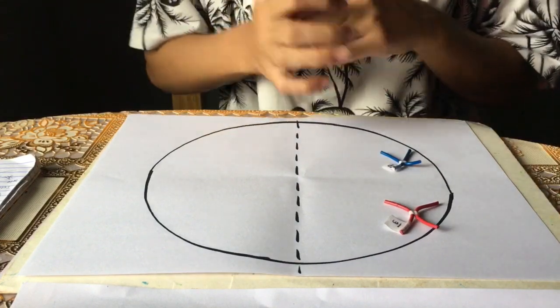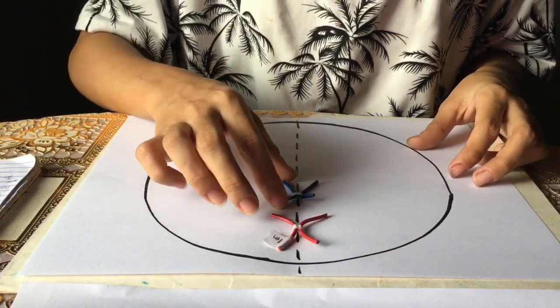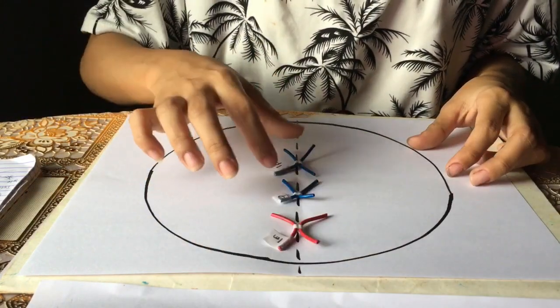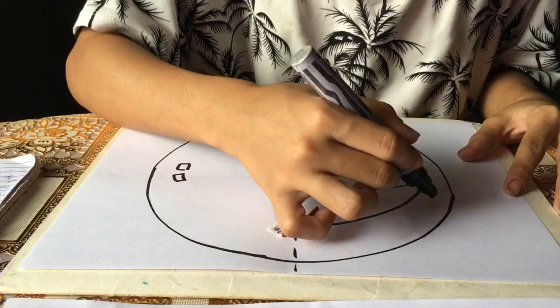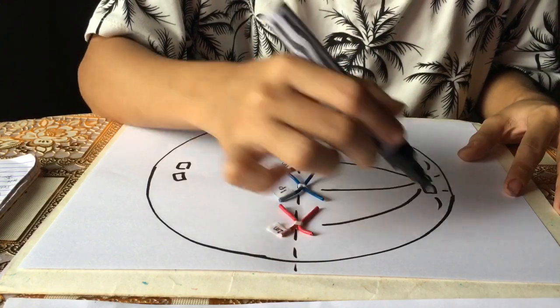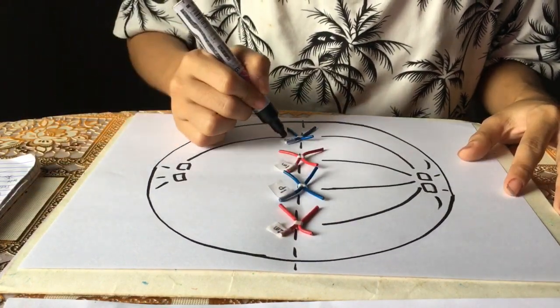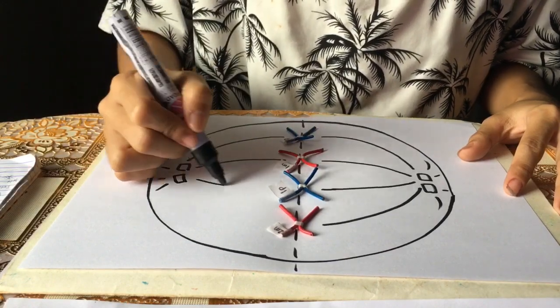In metaphase, the spindle fibers align the chromosomes along the middle of the cell nucleus. This line is referred to as the metaphase plate. This organization helps to ensure that in the next phase, when the chromosomes are separated, each new nucleus will receive one copy of each chromosome.